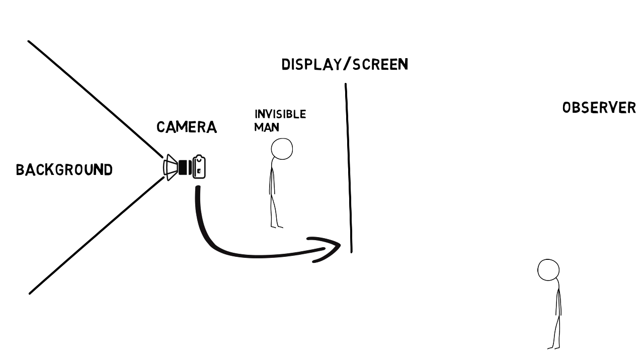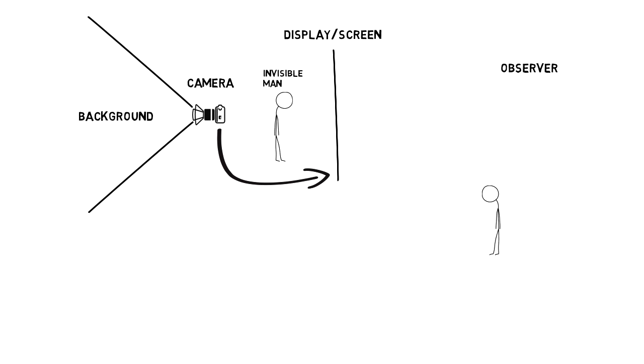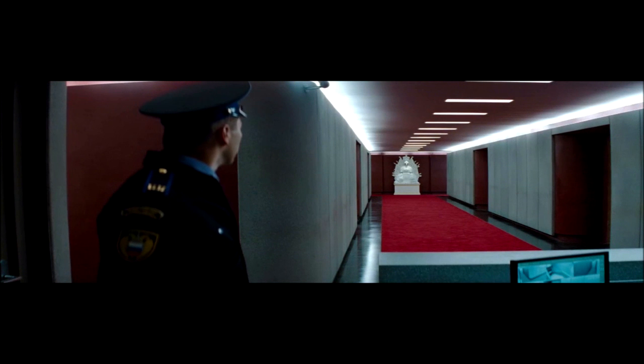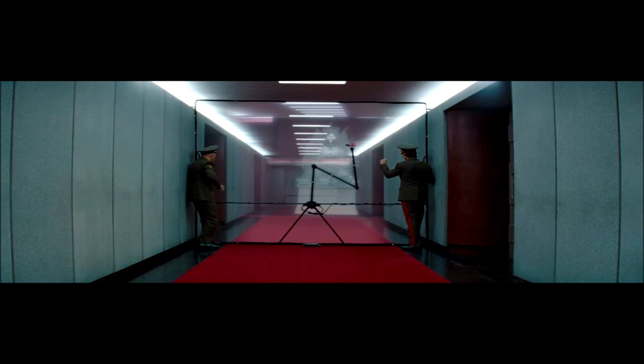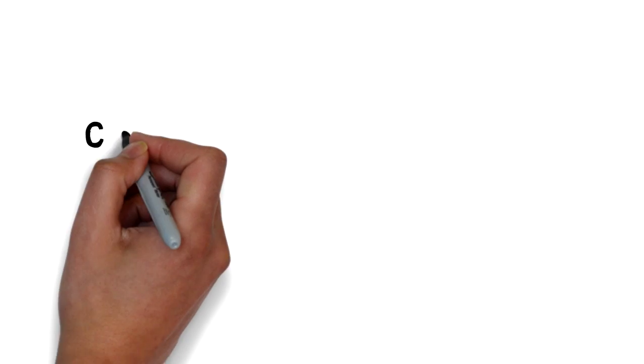So to make it look more real, we have to track the eye of the observer and change the display on the screen accordingly. This is shown in the next clipping. So we have achieved complete invisibility.